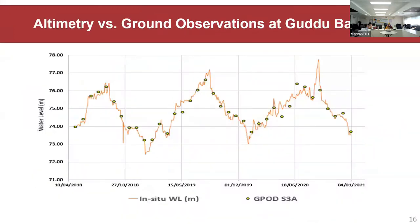These are some of our results. Looking at altimetry versus ground observations at Guddu Barrage, the continuous time series line is from the in-situ gauge data, while the discrete points are from Sentinel-3A. These are discrete data points because Sentinel-3A data is acquired every 27 days. You can see it's a very good agreement. Those interested in statistics can request our report or preliminary results showing the error analysis.